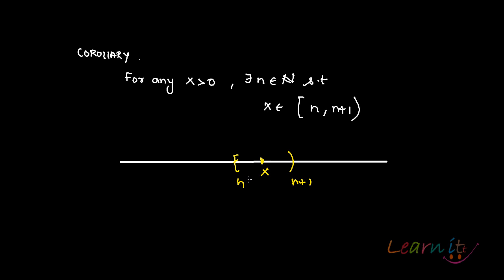So any positive x can be placed in an interval type. Any positive real number can be placed in an interval type. So as I said, 4.33 is between 4 and 5.